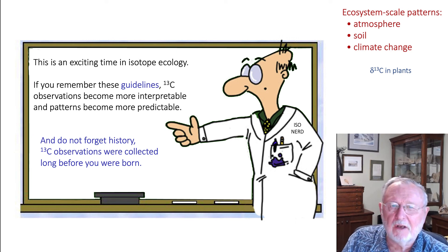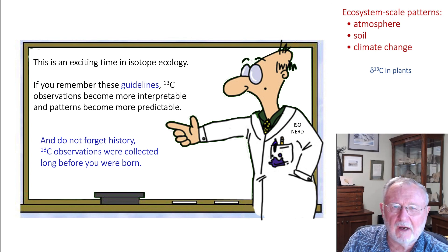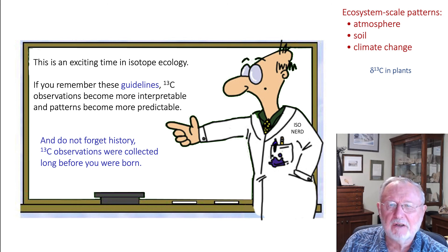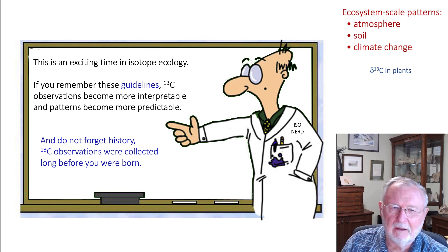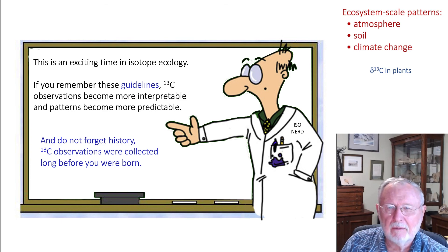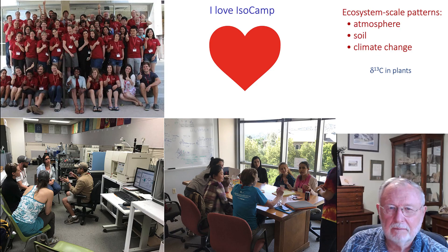This is an exciting time in isotope ecology. If you remember the nine guidelines I've presented, ¹³C observations will become more interpretable and patterns will be more predictable. Just remember that as our understanding of theory improves, we might change our explanation — so good isotope values are always going to be useful, we just might change the interpretation. And don't forget: ¹³C observations were collected long before you were born — do not ignore the older literature. I've spent most of today highlighting the foundational literature, not the hot literature of the last two or three years. Thank you.